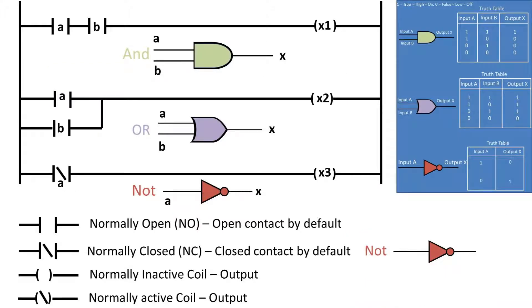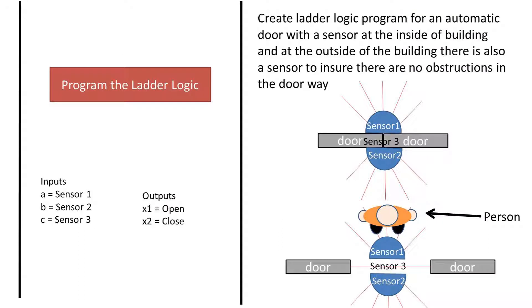For your reference and a refresher, here's a slide that goes over the basics of ladder logic. We have three inputs, which are sensor 1, 2, and 3, and two outputs, which are open door and closed door.